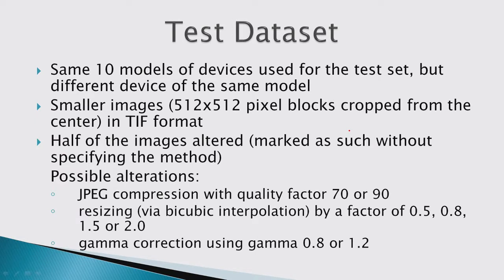For the test dataset, they used the same 10 device models but a different physical device for each model. Instead of full resolution images, they cropped 512×512 pixel blocks from the center. Images in the test set were in TIFF format rather than JPEG, but half of the images were altered before being put into this format — the possible alterations were JPEG compression, resizing, or gamma correction.